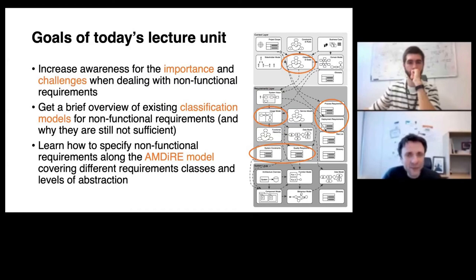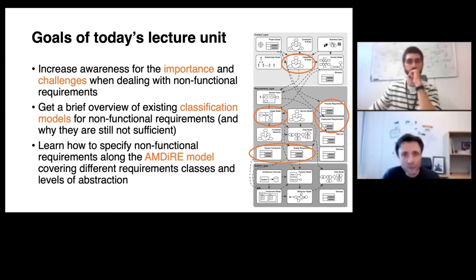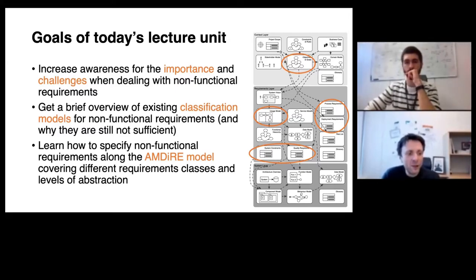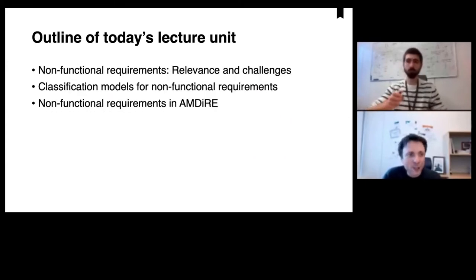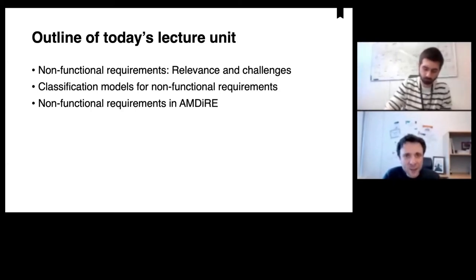The goals of today are: first, to increase awareness for the importance and challenges when dealing with non-functional requirements; second, to get a brief overview of the existing literature, including classification models for non-functional requirements and why they are not sufficient for the challenges we encounter in practice; and third, to learn how to specify non-functional requirements along the MDIA model, covering different levels of abstraction as well as different content items. The three topics for today are: relevance and challenges, existing classification models, and how to incorporate them in MDIA.